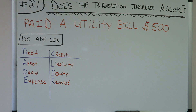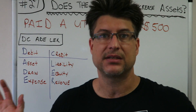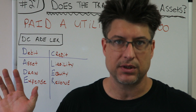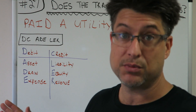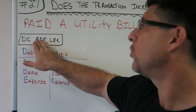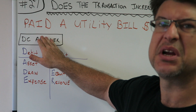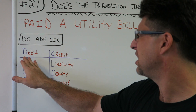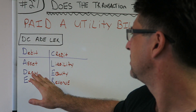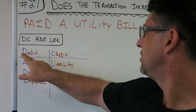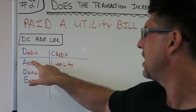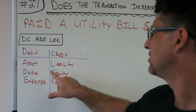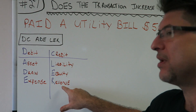As you've been doing, as you've been practicing every morning for a month straight, two months straight, you know what this is in your brain, but you're just going to write it down on your test paper anyways. DC ADE LER: Debit, Credit, Asset, Draw, Expense, Liability, Equity, Revenue.